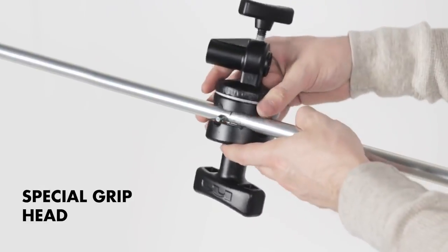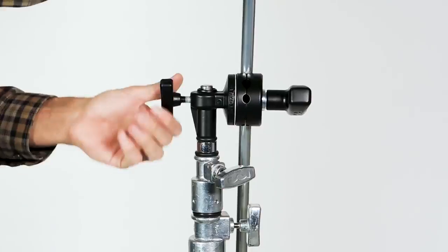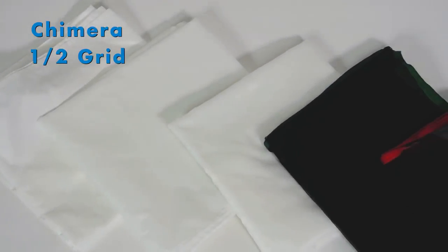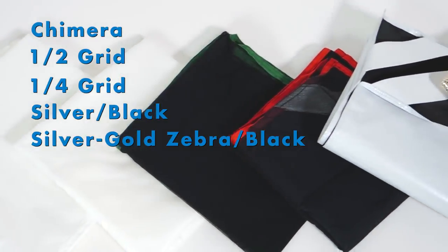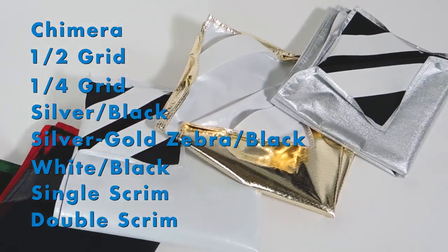Shamira panel frames can be used with the specially designed Matthews 2 1/2 inch grip head or panel frame connectors, allowing for a variety of setup and usage options. There are 8 panel fabric options: 3 diffusions, 3 bounce blacks, and 2 scrims.